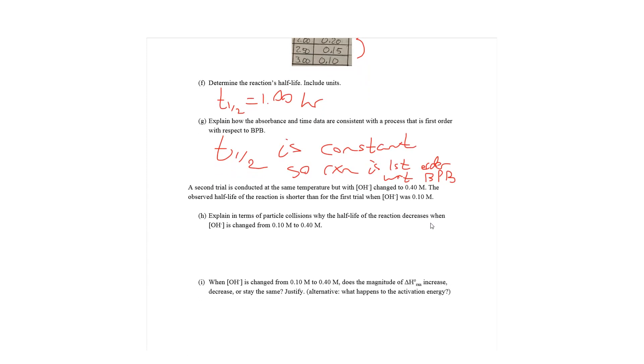Part H: A second trial is conducted at the same temperature, but with the concentration of hydroxide changed to 0.4 molar. The observed half-life of the reaction is shorter than for the first trial when OH was 0.1 molar. Explain in terms of particle collisions why the half-life of the reaction decreases when the concentration of hydroxide is changed from 0.1 molar to 0.4 molar. So, increasing the molarity of the hydroxide is also going to increase the number of particles since the volume stays the same. So, what that means is that there's more particles, so there's a higher collision frequency. But because the collision frequency increases, that means there's more reactive collisions, meaning a collision at the right orientation forms a new chemical species. So, that also increases the reaction rate. And if the reaction is happening faster, then the reactants take less time to be cut in half. So, that means half-life decreases.